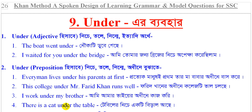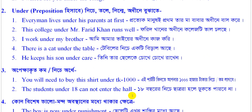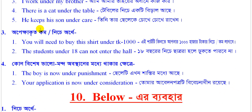There is a cat under the table. টেবিলের নিচে একটি বিড়াল আছে। He keeps his son under care. তিনি তার ছেলেকে চোখে চোখে রাখেন। You will need to buy this shirt under 10,000. এই শার্টটি কিনতে আপনার 1000 টাকার নিচে বা কম লাগবে।